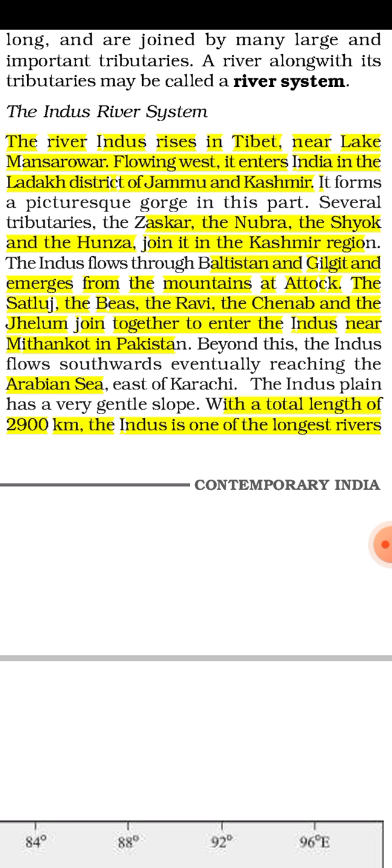In your previous class we discussed what a gorge is. A gorge means when a river constantly flows through an upland area or mountain, it separates that area into two parts because of its erosional activity. It creates a deep, narrow channel — known as a gorge or deep scar. This type of gorge is created by the Indus river here because it is a Himalayan river carrying a huge amount of water and performing erosional activity in its upper course.